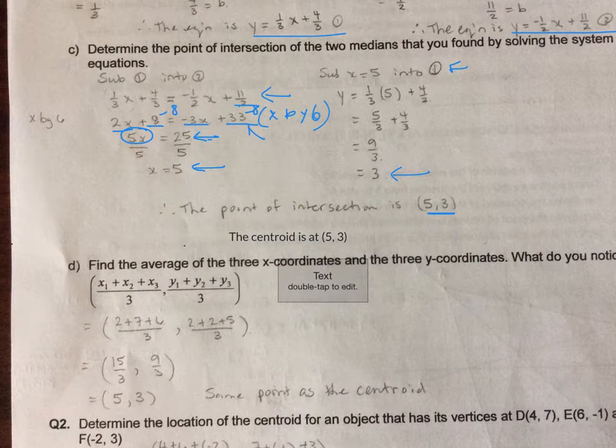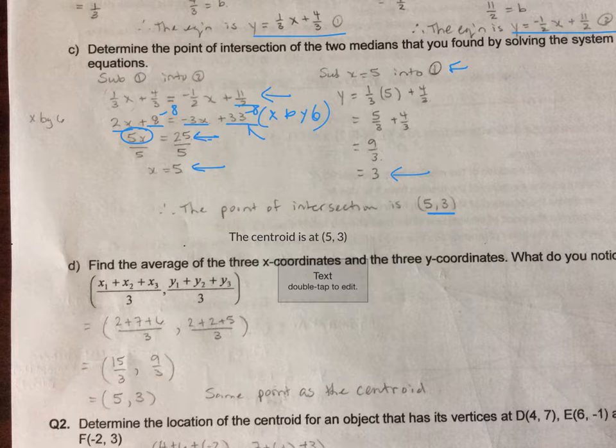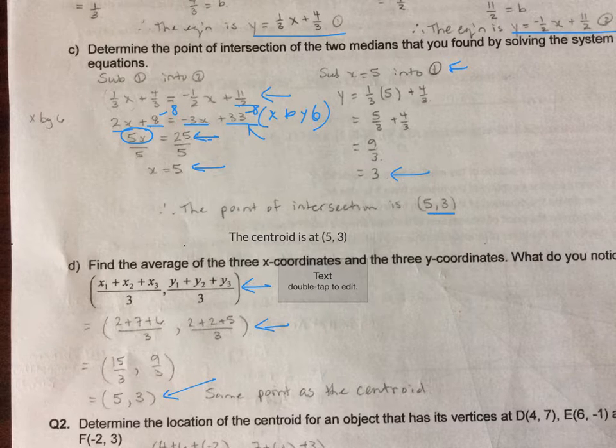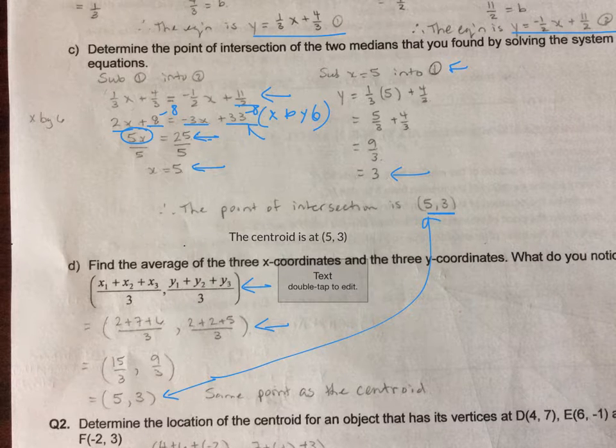Now in part D, you're asked to find the average of the three x coordinates for our three points that we were given and the average of the three y coordinates using this formula. So when you substitute those things in, do you notice that the answer was 5, 3, which is the same as the centroid? So there's actually a shortcut for getting the centroid for a triangle. It's the only one of our special points that we're going to learn about that has a shortcut. The other ones require you to get the equations of whatever it is we're working with, whether it's altitudes or perpendicular bisectors and finding the intersection points, just like we've done with the medians here.